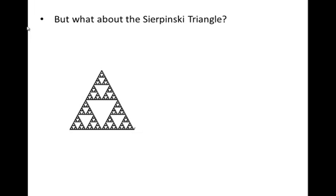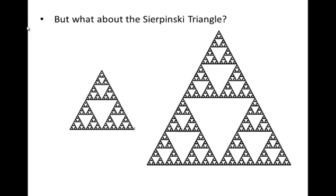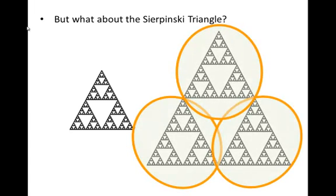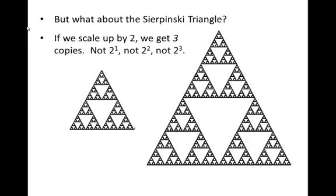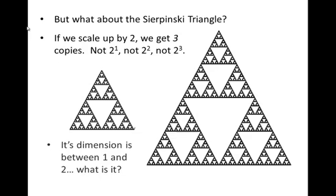So what about our Sierpinski triangle? Suppose you take this triangle and scale it up by a factor of 2 — how many copies of the original triangle do you get? You get three of them. So when we scaled it up by 2, we got three copies — not 2 to the first power, not 2 to the second power, not 2 to the third power. In fact, since 2 to the first power is 2 but 2 squared is 4, and we got 3, it has to be some dimension between 1 and 2.